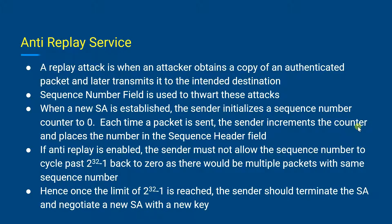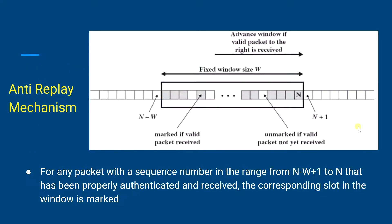Because IP is a connectionless and unreliable service, this protocol will not guarantee that packets will be delivered in order, and it does not guarantee that all packets will be delivered. Therefore, the IP security authentication document will dictate that the receiver should implement a window size W, with the default of W equal to 64.